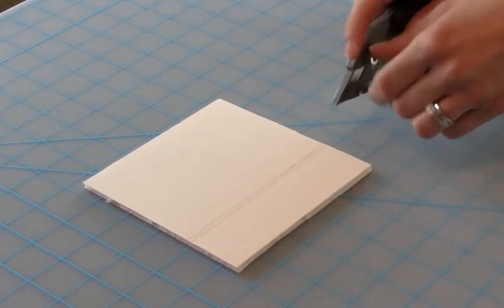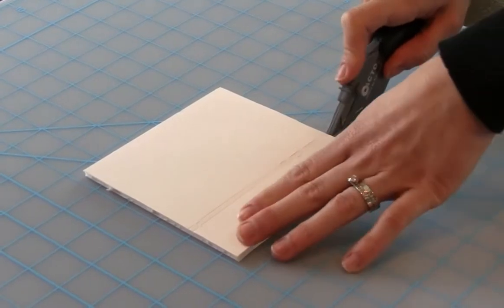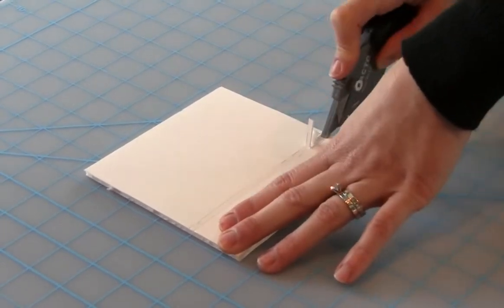Next, use the nose of the cutter with the blade retracted to remove the channel of foam and the paper that was cut.